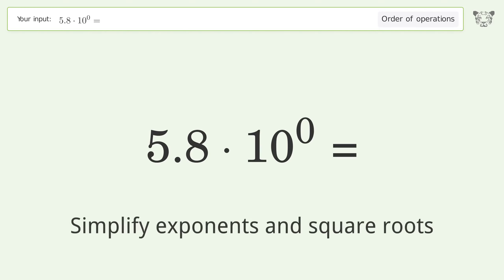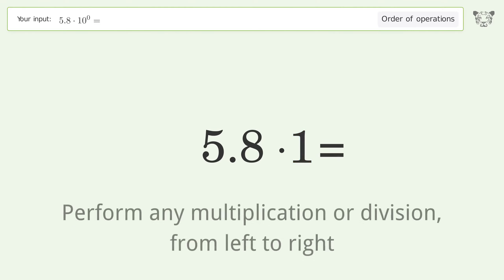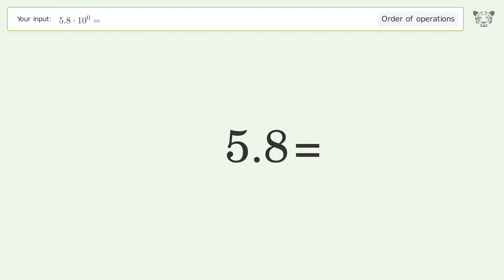First, simplify exponents and square roots: 10 to the power of 0 equals 1. Then perform multiplication from left to right: 5.8 times 1 equals 5.8. And so the final result is 5.8.